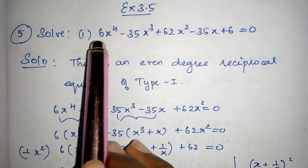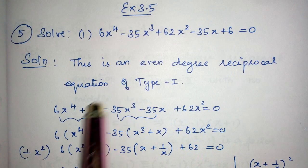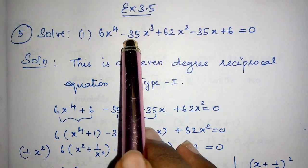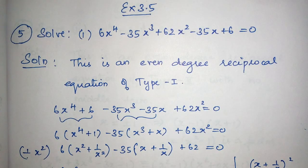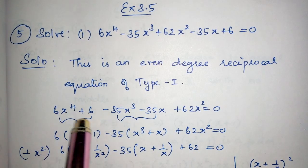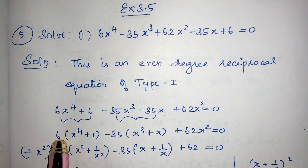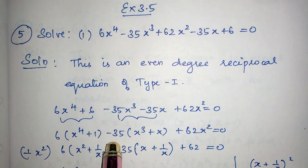Now I am going to group the first term and the last term since the coefficients are the same, and the next two terms where the coefficients -35, -35 are the same. From these two terms I have taken 6 outside and from these two terms I have taken -35 outside.